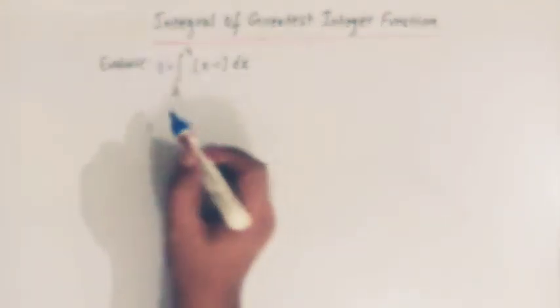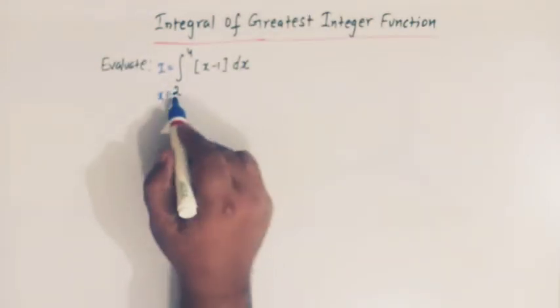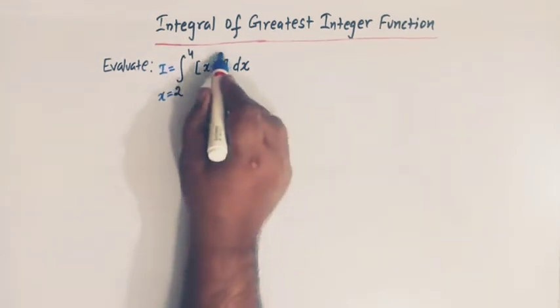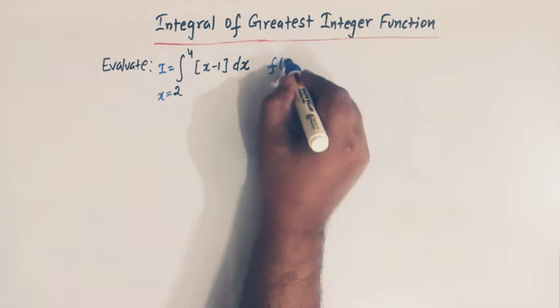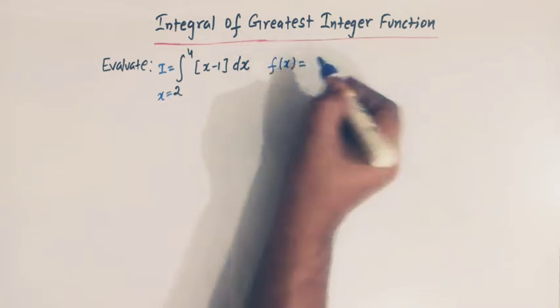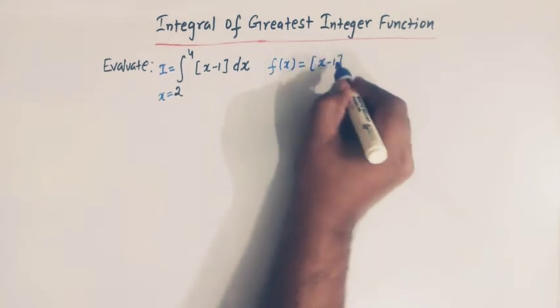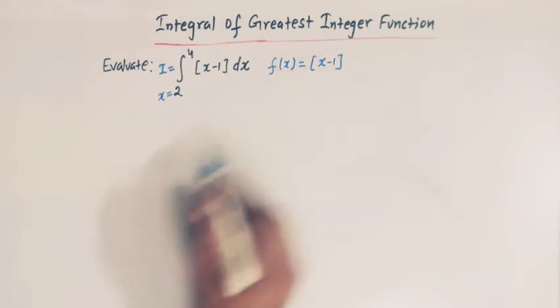Let us first call this integral as I. Here we see that x varies from 2 to 4. Let us denote this function as f(x), so we have f(x) = ⌊x − 1⌋.